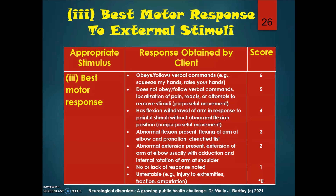Going down the motor response scale, scores decrease all the way to no response. A score of 2 indicates abnormal extension — extension of the arm and elbow with adduction and internal rotation of the arm and shoulder. We may apply a small amount of painful stimuli, such as squeezing the individual's nail beds using a pen, to see if they respond to that stimuli.